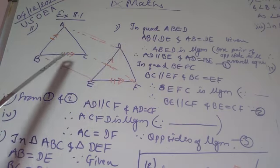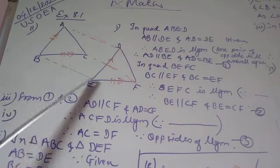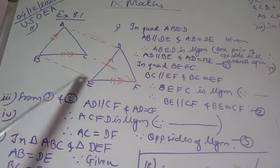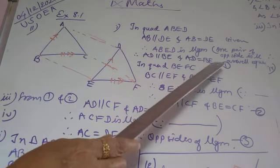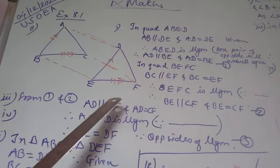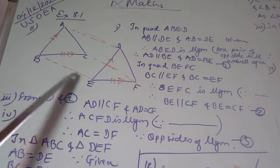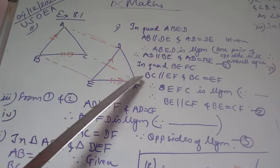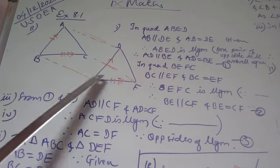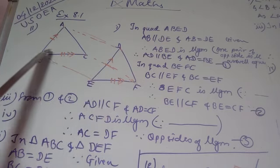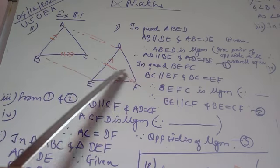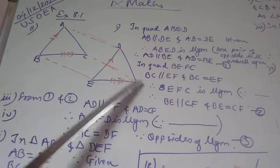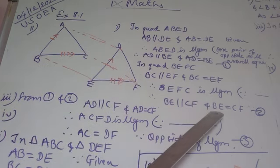Since ABED is a parallelogram, AD is parallel to BE and AD is equal to BE — this is equation 1. Now in quadrilateral BEFC, the opposite sides are also parallel as well as equal, so BEFC is also a parallelogram. Therefore, BE is parallel to CF and BE is equal to CF — this is equation 2.